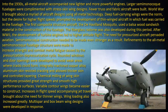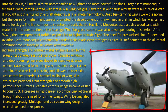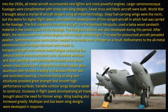Into the 1930s, all-metal aircraft accompanied new lighter and more powerful engines. Larger semi-monocoque fuselages were complemented with stressed skin wing designs. Fewer truss and fabric aircraft were built. WWII brought about a myriad of aircraft designs using all-metal technology. Deep fuel-carrying wings were the norm, but the desire for higher flight speeds prompted the development of thin-winged aircraft in which fuel was carried in the fuselage. The first composite structure aircraft, the de Havilland Mosquito, used a balsa wood sandwich material in the construction of the fuselage. The fiberglass radome was also developed during this period.